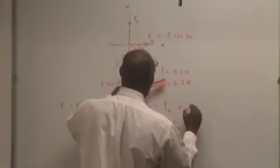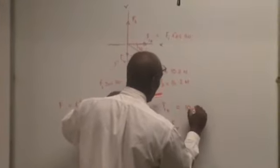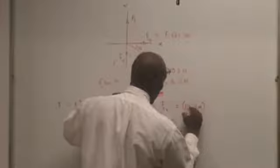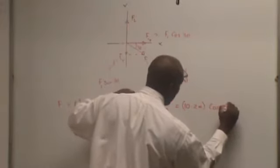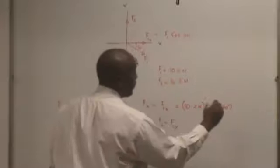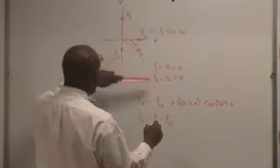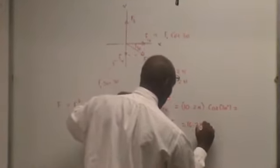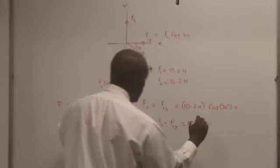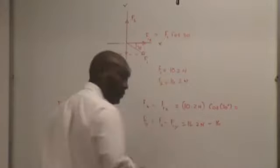This is what? F1x is 10.2 times cosine of 30 degrees. If you work that out, that's going to give you some number.